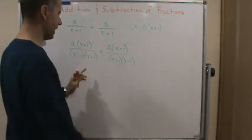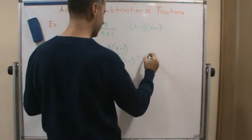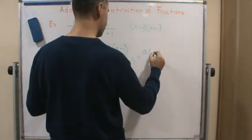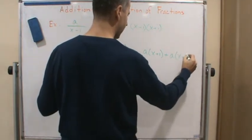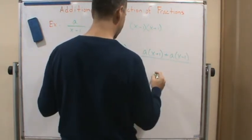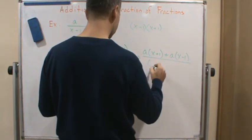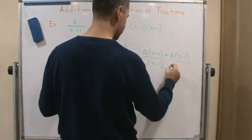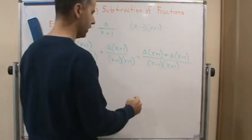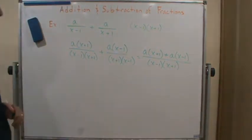So we can add across the top. What do we get? We get a times x plus 1 plus a times x minus 1, and we get x minus 1 times x plus 1.